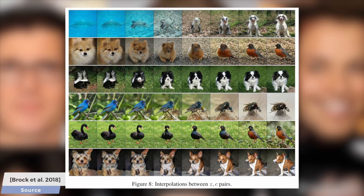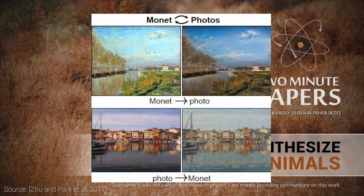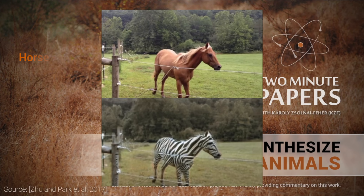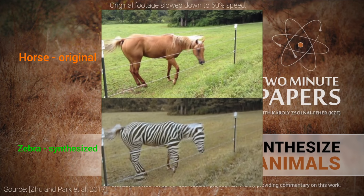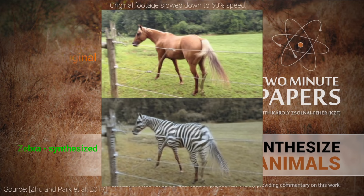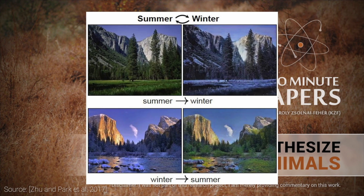One way of being able to control the outputs is to use a technique capable of image translation. What you see here is a work by the name CycleGAN. It could transform apples into oranges, zebras into horses, and more. It was called CycleGAN because it introduced a cycle consistency loss function. This means that if we convert a summer image to a winter image and then back to a summer image, we should get the same image back or at least something very similar. If our learning system obeys this principle, the output quality of the translation is going to be significantly better.